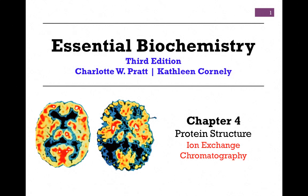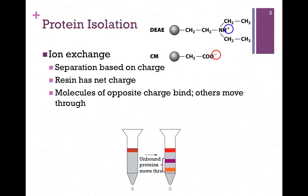In this lesson on protein structure from Chapter 4, we want to look briefly at ion exchange chromatography. Recall in a previous lesson we looked at size exclusion column chromatography. In this case, we want to look at another commonly used method of column chromatography referred to as ion exchange.